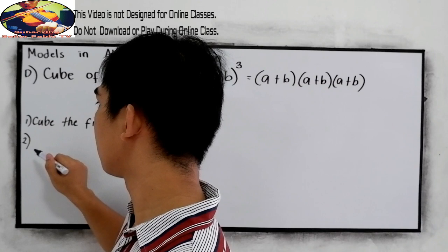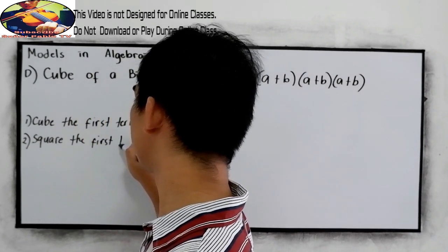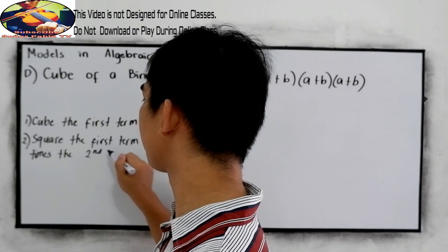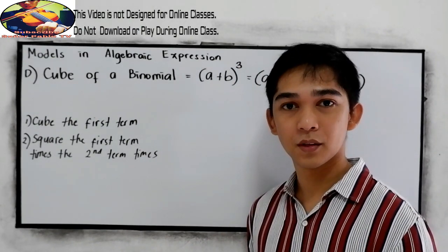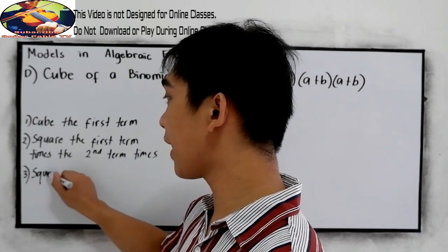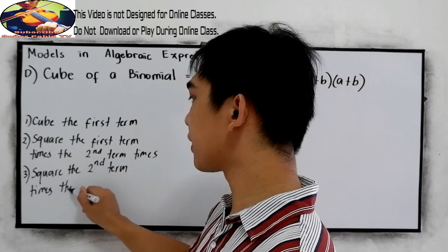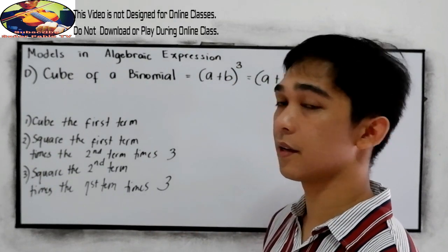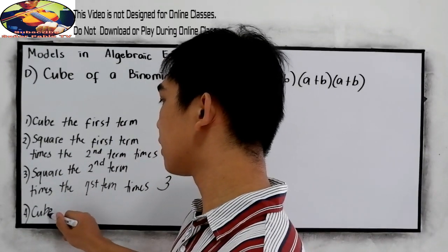Step two: square the first term, times the second term, times 3. We need to square the first term times the second term, then after getting the product, multiply by 3. Step three: square the second term times the first term times 3. And for the last step: cube the second term.